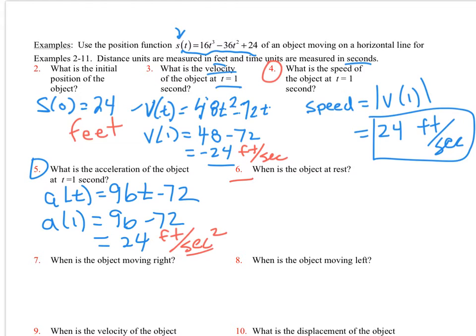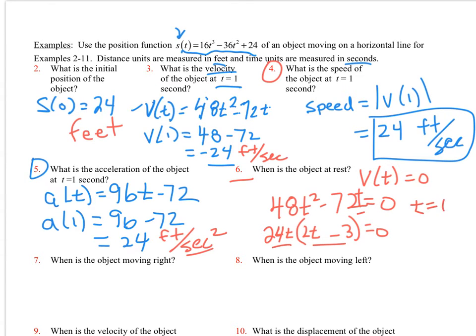Then number six. When is this object at rest? That means our velocity is equal to zero. So what I'm going to do is I'm going to take this 48 T squared minus 72 T and set it equal to zero. If I solve that, I jumped ahead of here a little bit on you and I missed this T here, but I get 24 T outside and then two T minus three on the inside. If I set each one of these equal to zero, I'm going to get T equal to zero and three halves. Those are the two times when my velocity will equal zero.